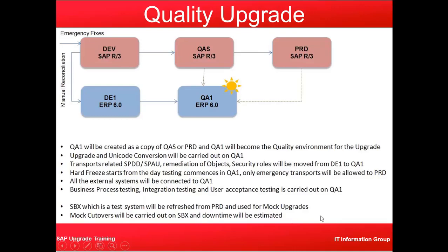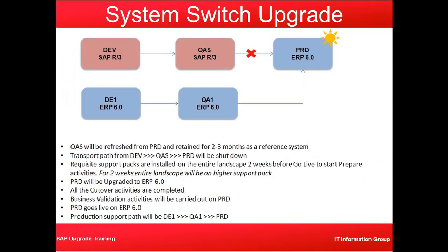For the production upgrade, we use the system switch upgrade method. QAS will be refreshed from production and retained for 2 to 3 months as a reference copy. The transport path from DEV to QAS to production will be shut down. The requisite support packs are installed on the entire landscape 2 weeks before go-live to start prepare activities, so the entire landscape will be on a higher support pack level.